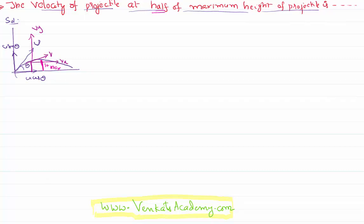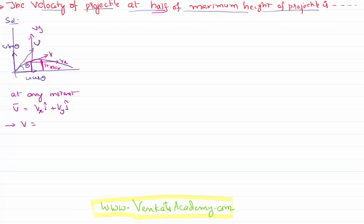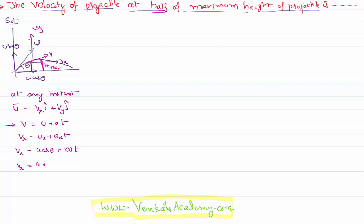To calculate velocity at any instant, I can write V as Vx·î + Vy·ĵ. I need to calculate both Vx and Vy. Using V = U + at, I write Vx = Ux + ax·t. The initial velocity along the x-direction is u·cosθ, and there is no acceleration along the x-axis — only gravity acts along the y-axis — therefore Vx remains constant throughout the projectile motion. So Vx = u·cosθ.